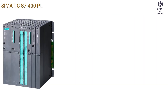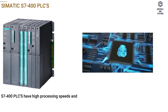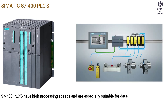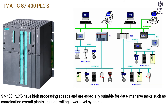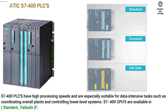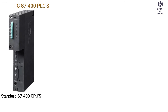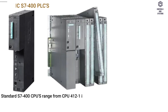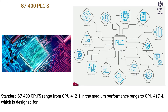Somatic S7-400 PLCs have high processing speeds and are especially suitable for data-intensive tasks such as coordinating overall plants and controlling lower-level systems. S7-400 CPUs are available in Standard, Failsafe (F), and High Availability (H) versions. Standard S7-400 CPUs range from CPU 412-1 in the medium performance range to CPU 417-4, which is designed for the high performance range.